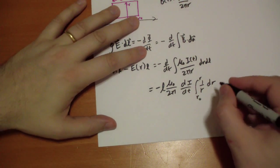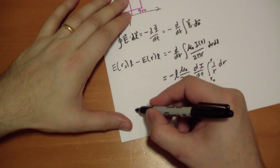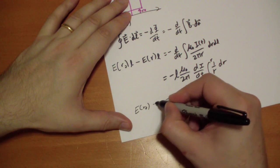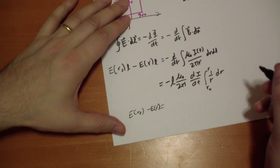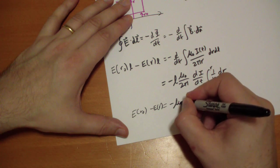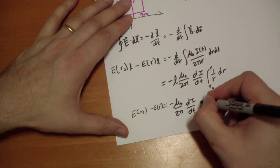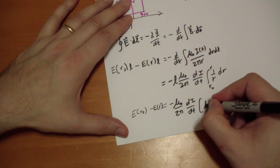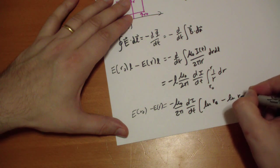And so that's going to be equal to, minus, E of r is equal to—I'm getting rid of the l's—minus mu naught over 2 pi d i by dt times log of r minus log of r naught.